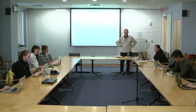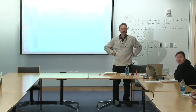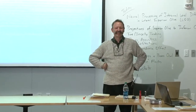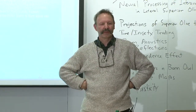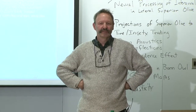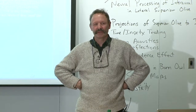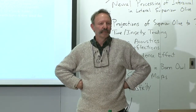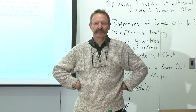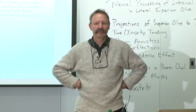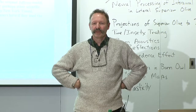Last time we talked about processing of cues used for binaural localization of sound—those being the interaural time and interaural level differences. We have those cues because the ears are physically separated on the sides of our head and because of the physical characteristics of sound, such as the velocity of sound in the air. We also talked about the neural processing of interaural time differences in the medial superior olive, or MSO.